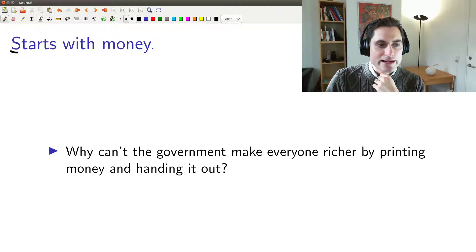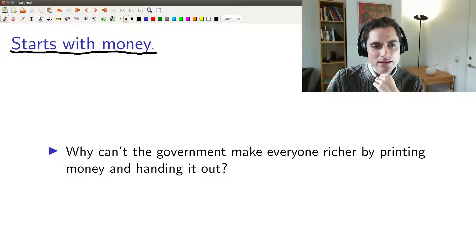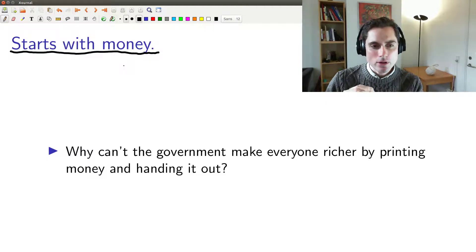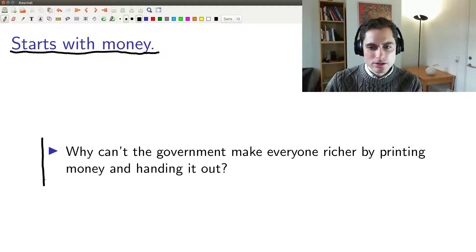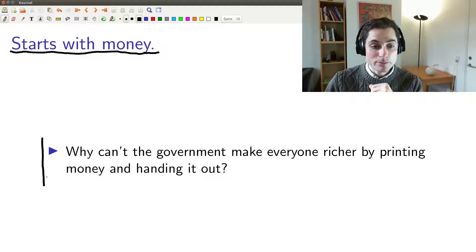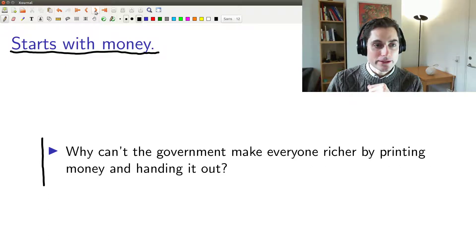So this whole question kind of starts with money. Thinking about money makes everything confusing, and in fact for the full first part of this course we're hardly going to talk about money at all. So that immediate question is: how come the government can't make everybody richer just by printing money and handing it out? I mean, we could all become millionaires if only the government would print more money and give it to us.